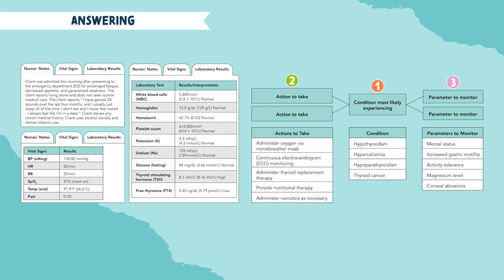The two boxes on the left ask what two actions the nurse should take based on the condition you just chose. And the two boxes on the far right ask what two parameters the nurse should monitor to track the client's progress.